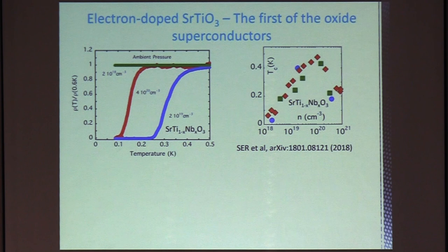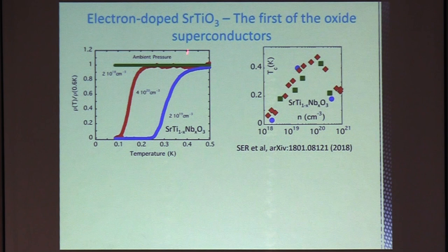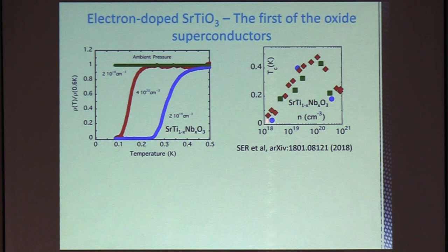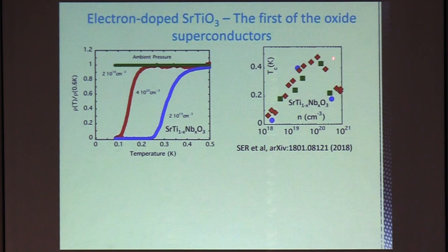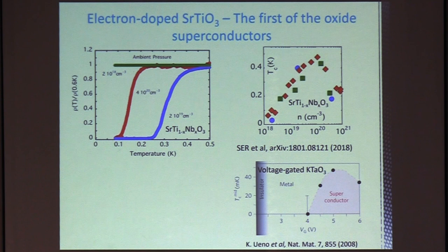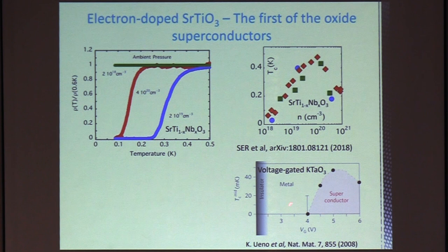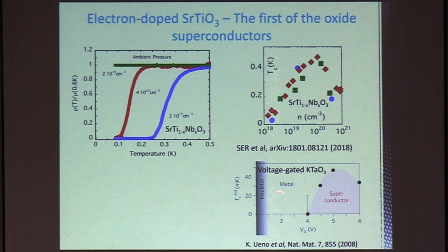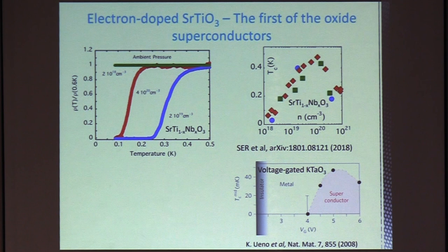So interestingly, some of these materials become superconductors at low temperature. So strontium titanate was the first of the oxide superconductors discovered in the 1960s. It has a TC versus carrier density here, which has a dome-like structure, and a maximum TC around half a Kelvin. Here's the resistivity plotted against temperature showing three different doping levels. And here's the voltage-gated potassium tantalate I showed on the last slide, where just dialing up the voltage on the instrument, you can tune it from insulator to metal to superconductor and back again. And it also seems to have a dome-like structure. So the gate voltage here is tuning the carrier density.